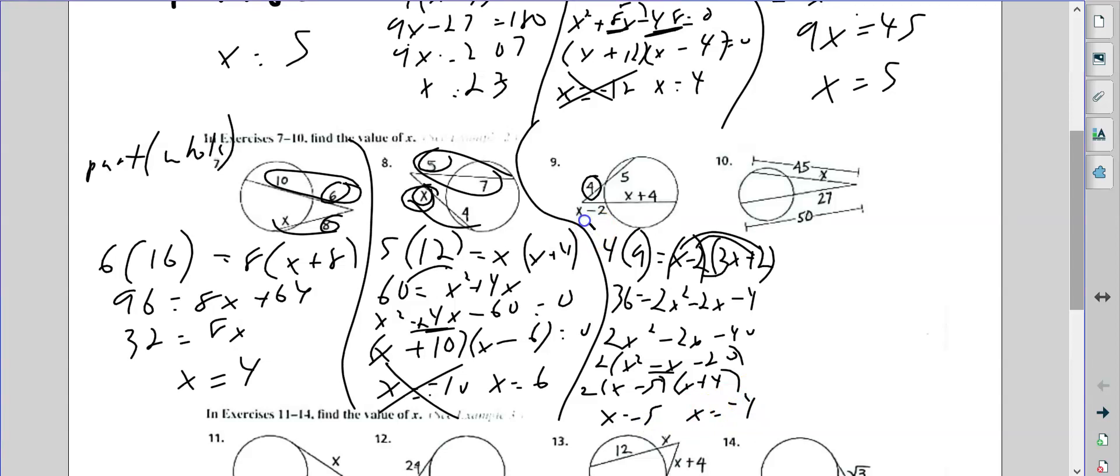So that gives me x equals 5 and x equals negative 4. Now again, I got to check. If I plug negative 4 in here, I get negative 6. If I plug in negative 4 here, I get 0. I cannot have a measurement of a negative number. And that definitely doesn't measure 0. So my answer is 5.